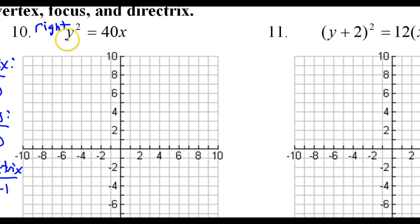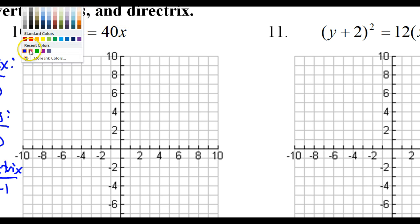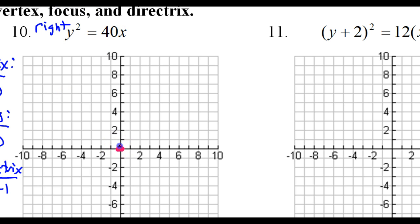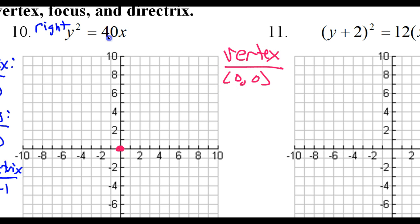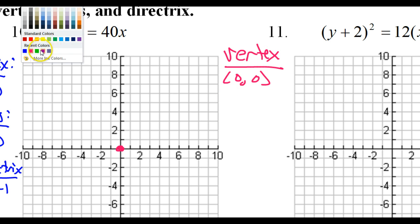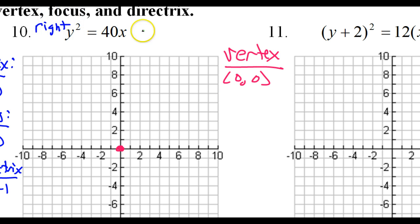I have y squared and x, so the vertex must be 0 comma 0. It would be useful to know the p value. So 4p is equal to 40, and if I divide both sides by 4, I get that p is equal to 10.